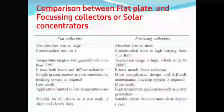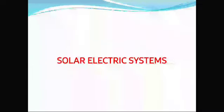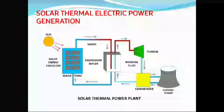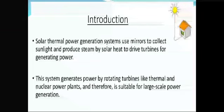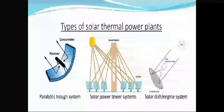This is a comparison between flat plate collectors and solar concentrators. Solar thermal power generation systems use mirrors to collect sunlight and produce steam by solar heat to drive a turbine for generating power. This system generates power by rotating turbines, similar to thermal and nuclear power plants, and is therefore suitable for large scale power generation. The three types covered are the parabolic trough system, parabolic dishes, and central tower systems.